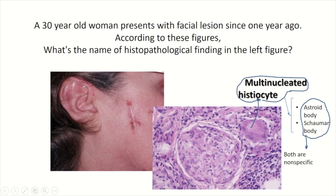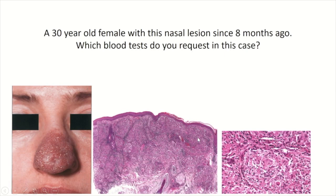In the histopathology of sarcoidosis, the multinucleated histiocyte may appear as an asteroid body or Schaumann body — these are inclusions within the multinucleated histiocyte. Asteroid bodies are eosinophilic stellate inclusions, and Schaumann bodies are round calcifications within the multinucleated histiocyte. Both are not specific for sarcoidosis but are indicative of it.